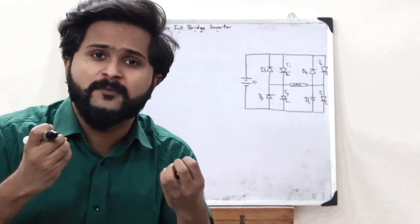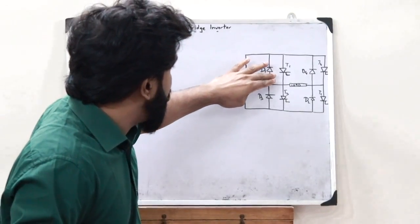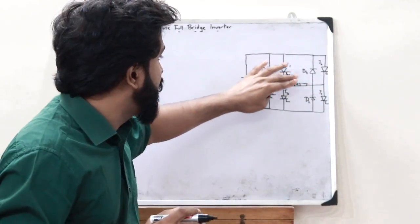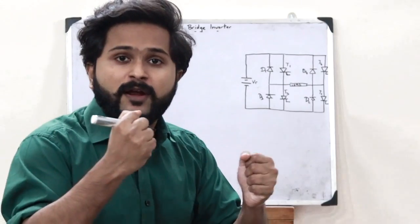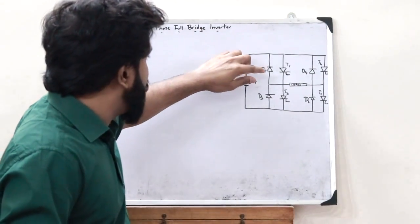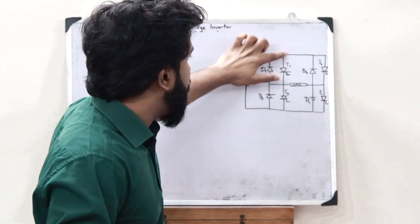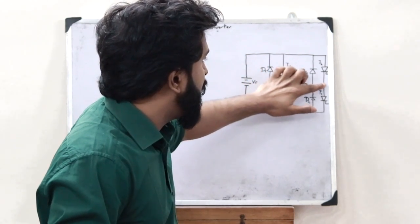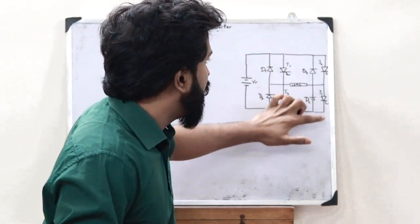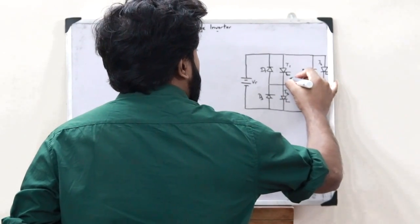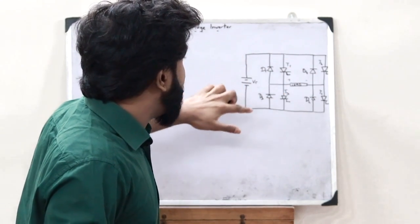There are two cases to consider. The first case is when T1 and T2 are triggered — when T1 and T2 are on, current starts flowing through this particular loop: it enters T1, passes through the load, passes through T2, and completes the circuit. Therefore, a polarity of plus-minus is induced onto the load in this direction.